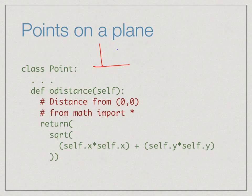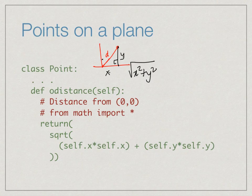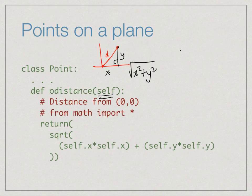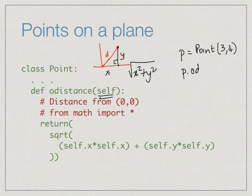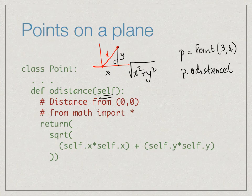Suppose we want to compute the distance of a point from the origin. By Pythagoras's theorem, this distance is the square root of x squared plus y squared — like the hypotenuse of a right angle triangle. The function o_distance does not take any arguments besides self. For instance, if p equals Point(3, 4), we would say p dot o_distance and assign the result to a name.